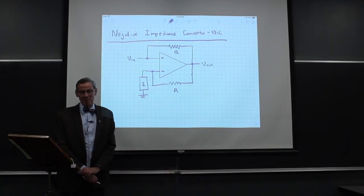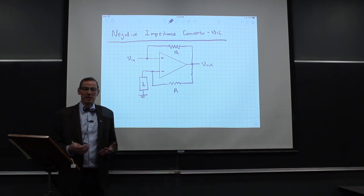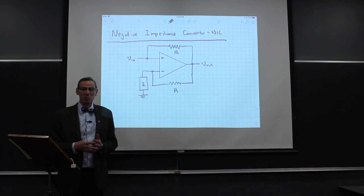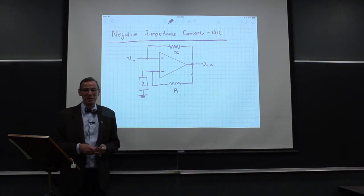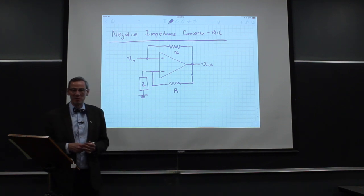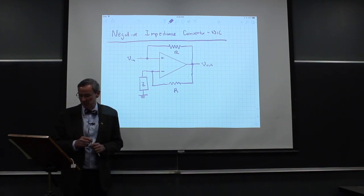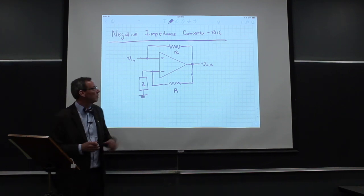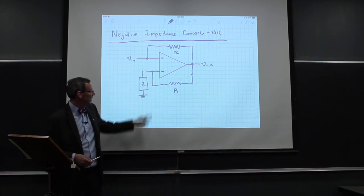We've talked about op amp circuits that do amplification, integrate, differentiate, high-pass, low-pass filters, logarithmic amplifiers, and exponential amplifiers. It's almost an endless number of things that we can do with op amps, and today we'd like to talk about something called a negative impedance converter, or a NIC.